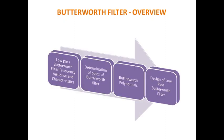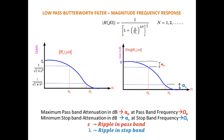The overview of what will be discussed today: first, we will see the frequency response and characteristics of a low pass Butterworth filter. Second, we will study how to determine the poles of the Butterworth filter, which are very essential regarding the stability of the filter. Third, we will study the Butterworth polynomials needed to realize the transfer function. Based on these three areas, we will design a complete low pass Butterworth filter.